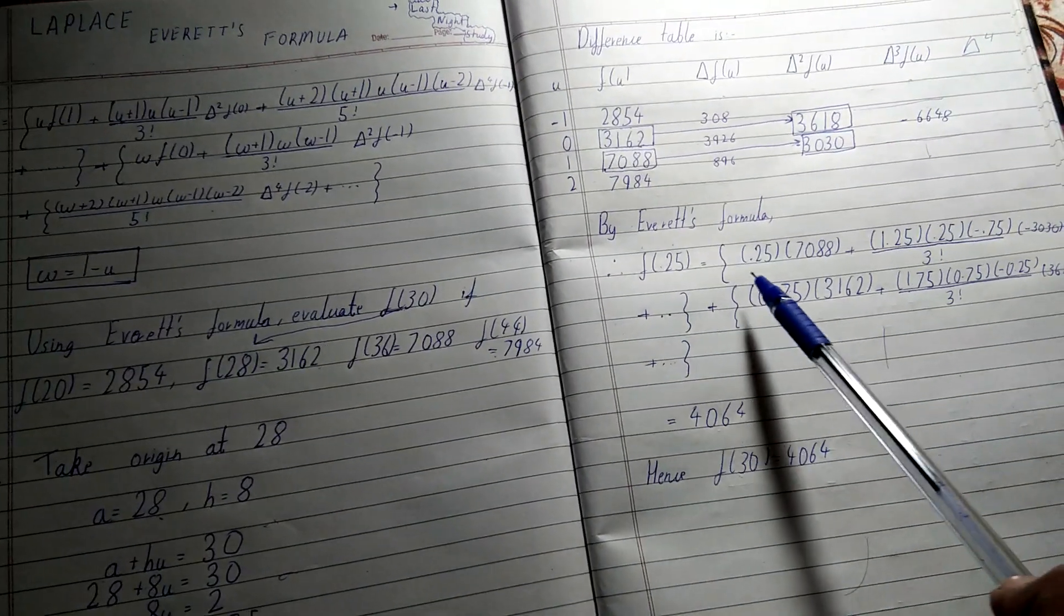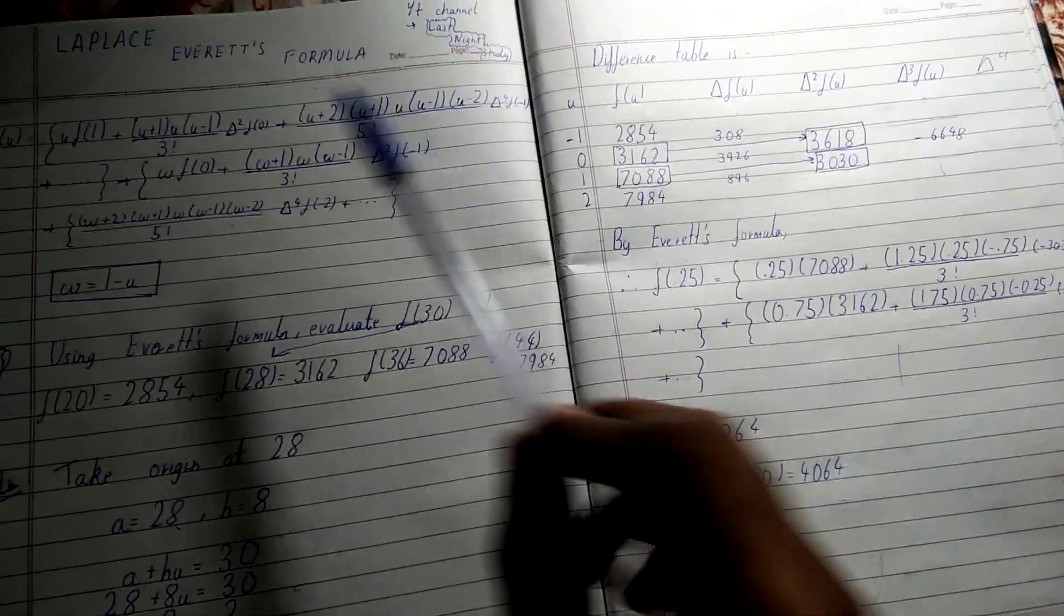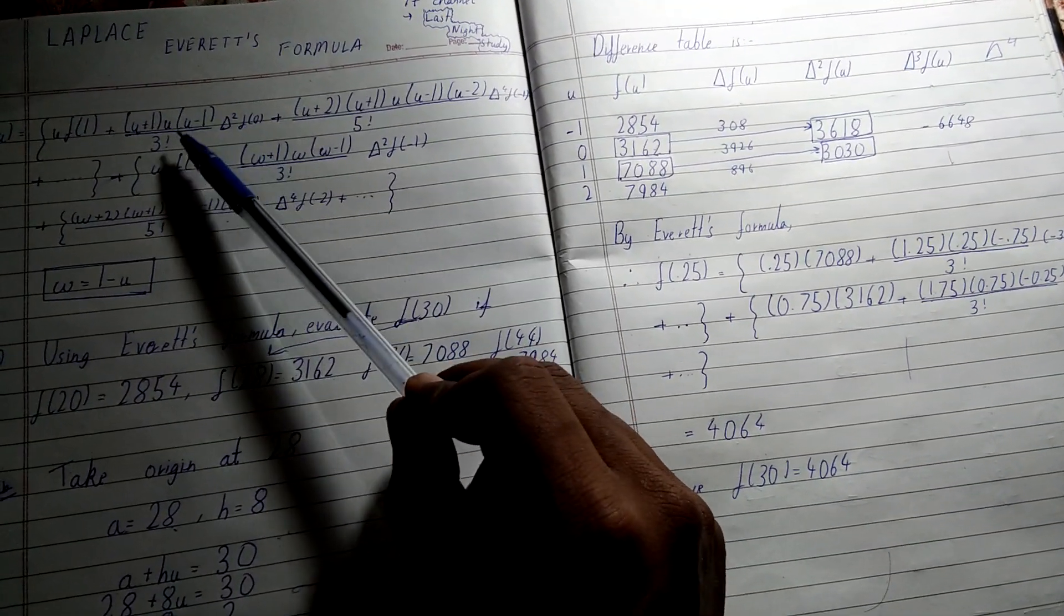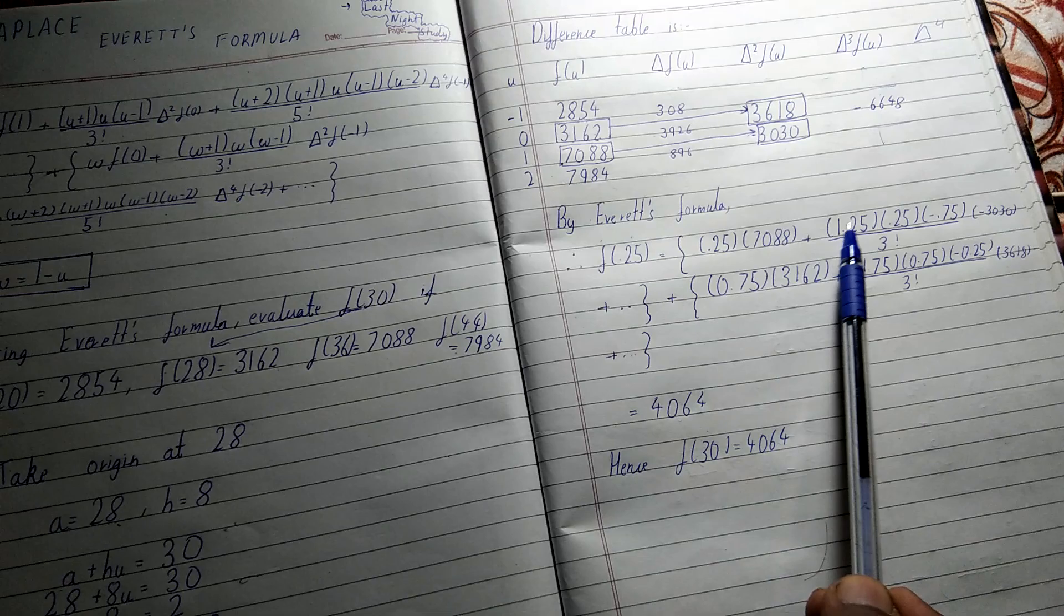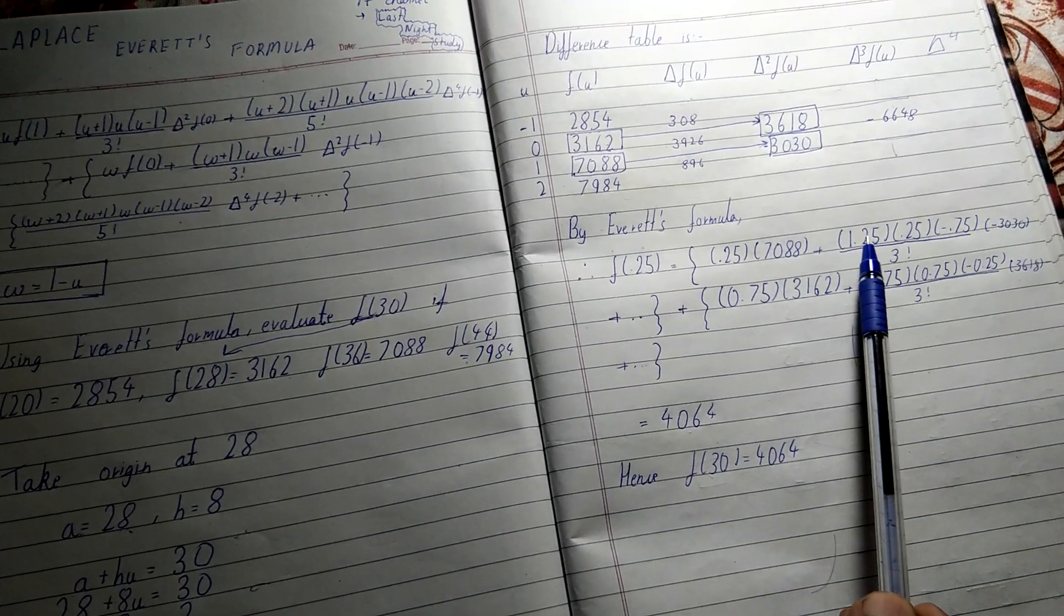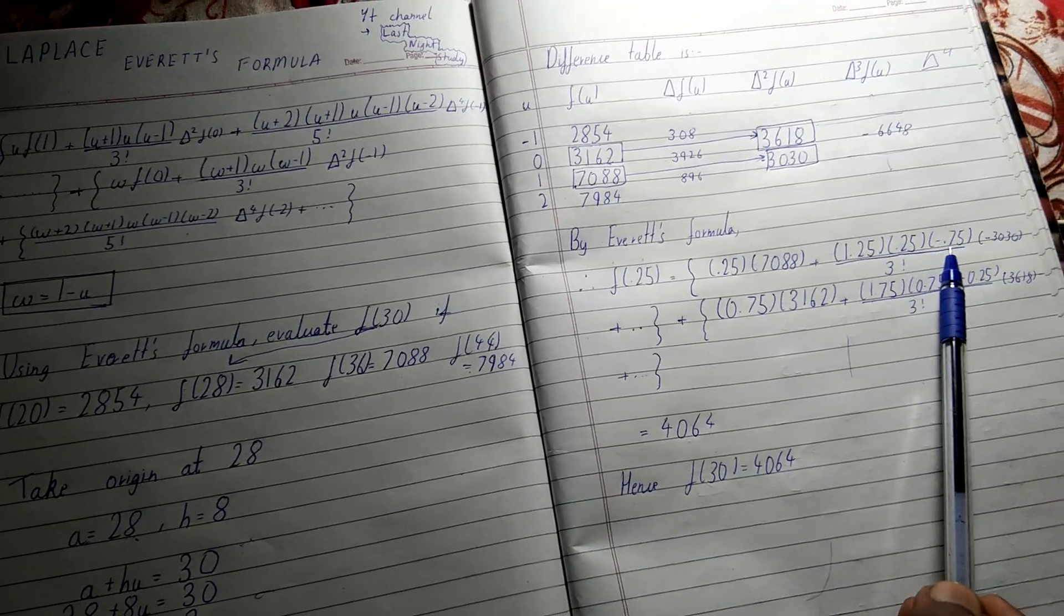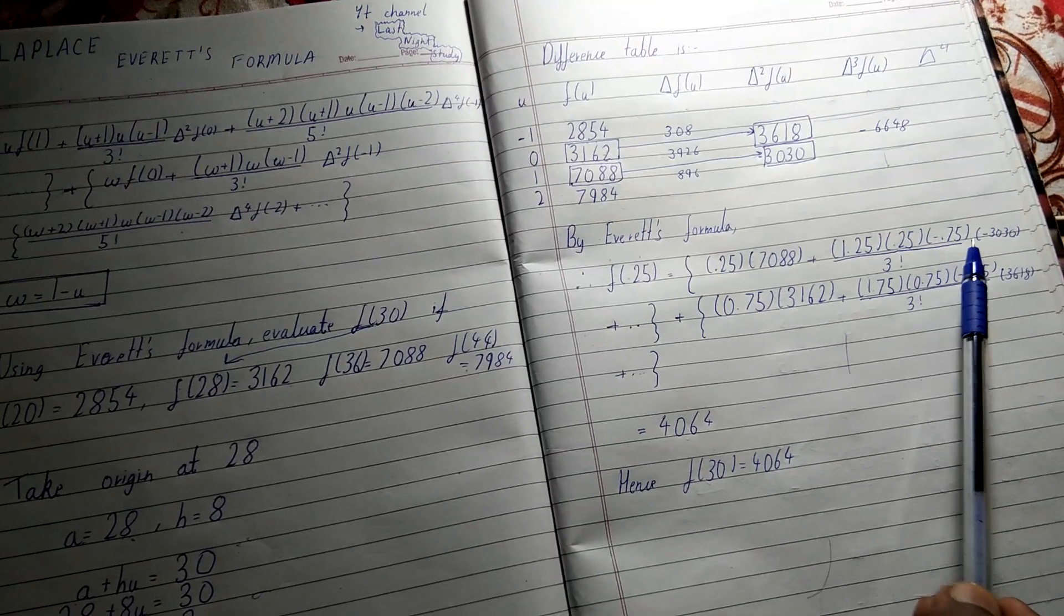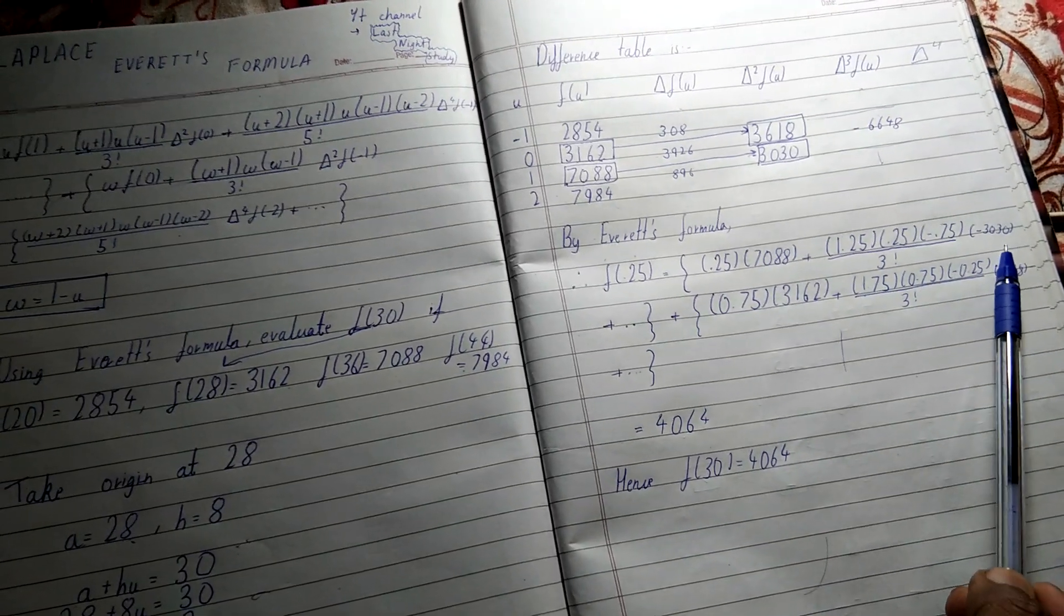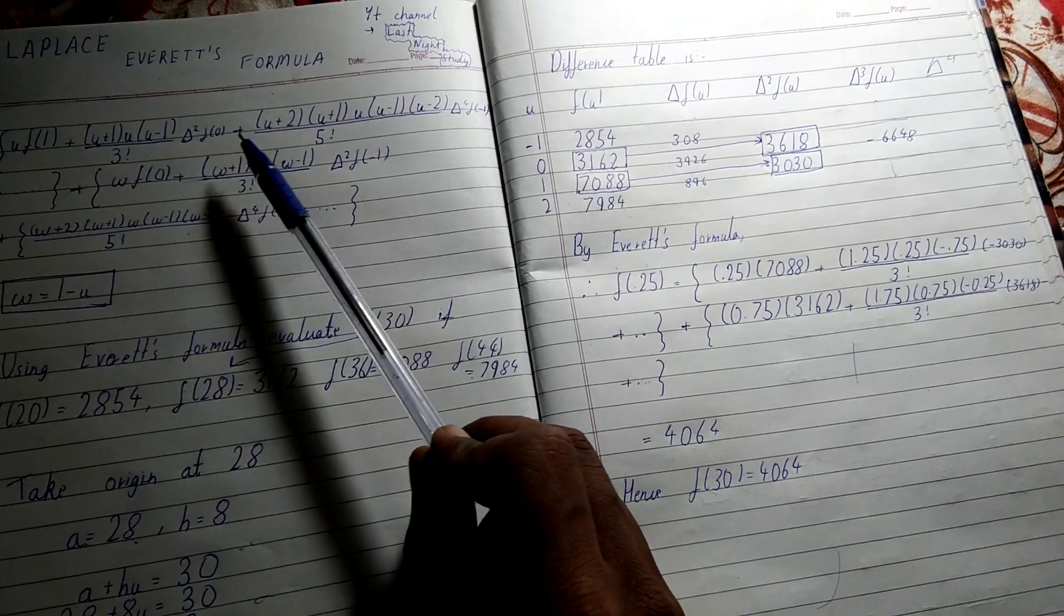And you can see that Δ²f(0) = -3030. So this is it. And remember that these above values will come over here—that is 3162 and 3618.